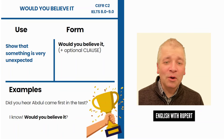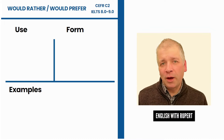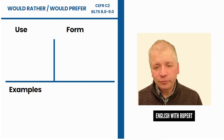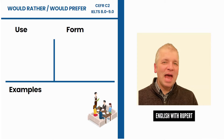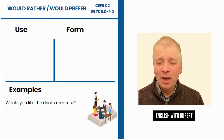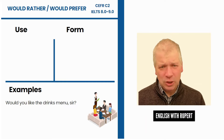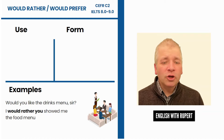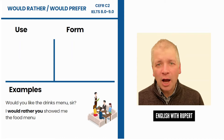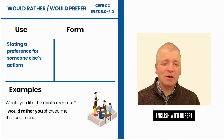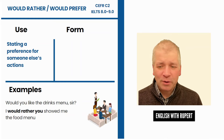Another phrase that includes 'would' is 'would rather', and there's also a similar phrase, 'would prefer', but they work in slightly different ways. Imagine you go to a restaurant and the waitress asks: 'Would you like the drinks menu, sir?' You want to see the food menu instead, so you respond: 'I would rather you showed me the food menu.' This is used to state a preference for someone else's actions.